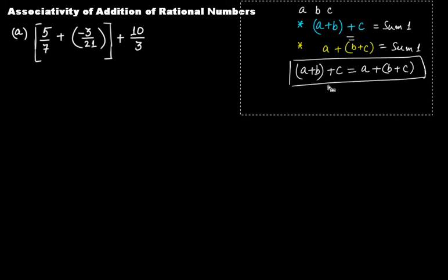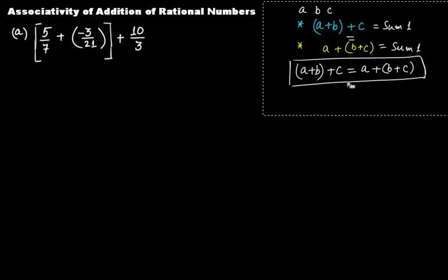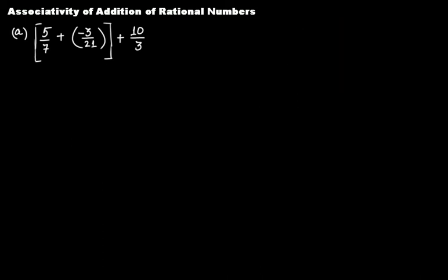So in this case we have [5/7 + (-3/21)] + 10/3. This means 5/7 + (-3/21) is A plus B inside the bracket, and 10/3 is C outside the bracket. Let's perform this calculation.